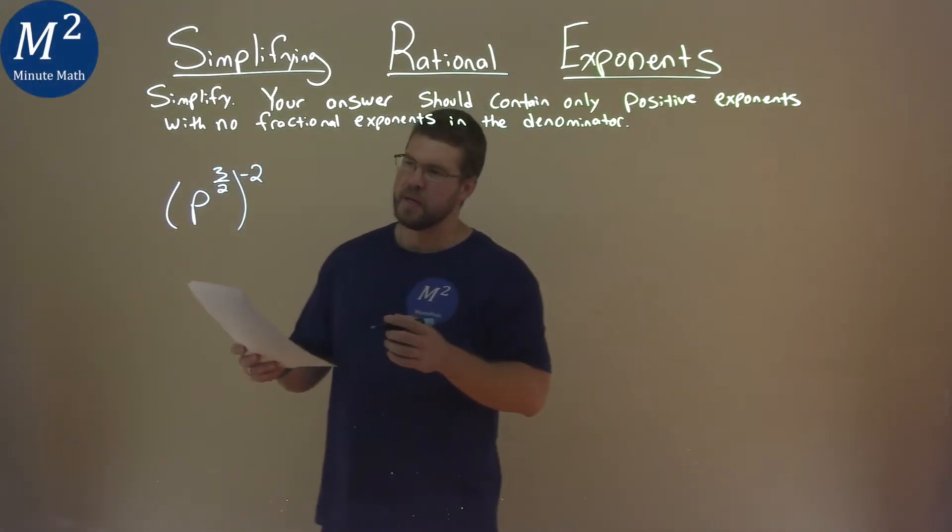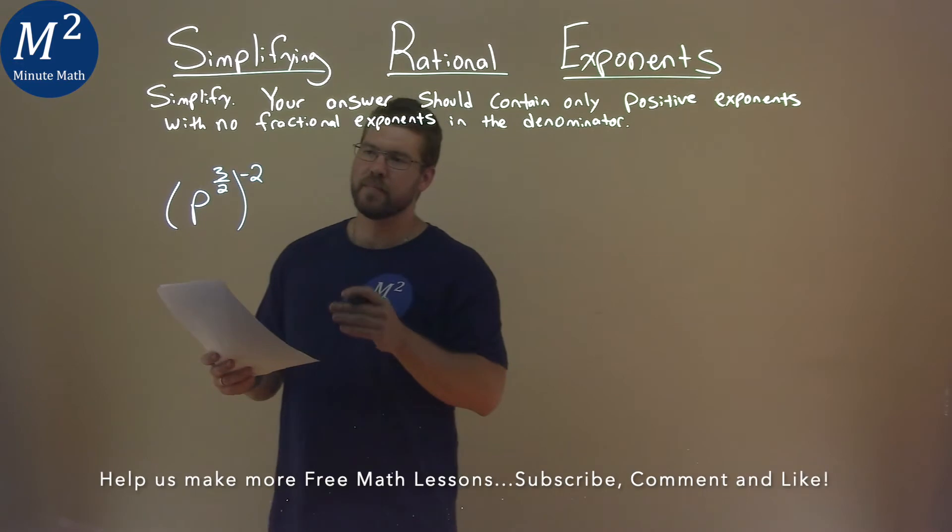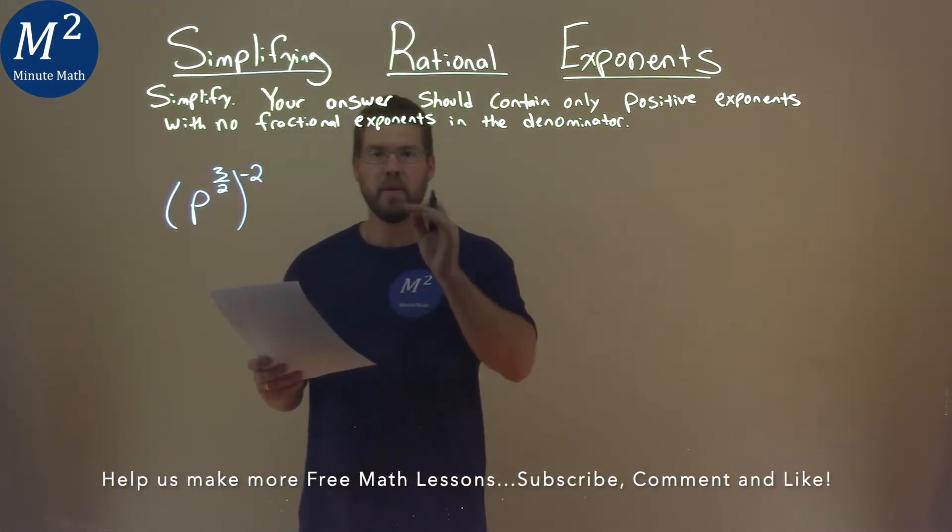We're given this problem right here: p to the 3 halves power, all to the negative 2 power, and we've got to simplify.